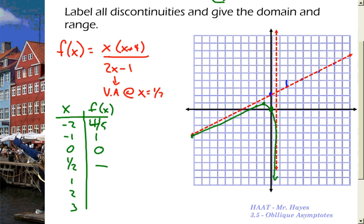You're going to end up coming down, then we're going to start coming back up. If I plug in 1, I get 1 times 5 on the top over 1, so I get a value of 5. If I plug in 2, I get 2 times 6 on the top, which is 12 over 3, so that's a value of 4.